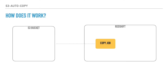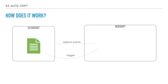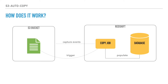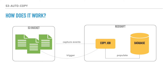Though you can define this in both manual and auto mode, the auto mode makes Redshift capture S3 events. As soon as a file is added to the bucket, it triggers the copy command and populates the database. This process repeats for every file added to the S3 bucket.